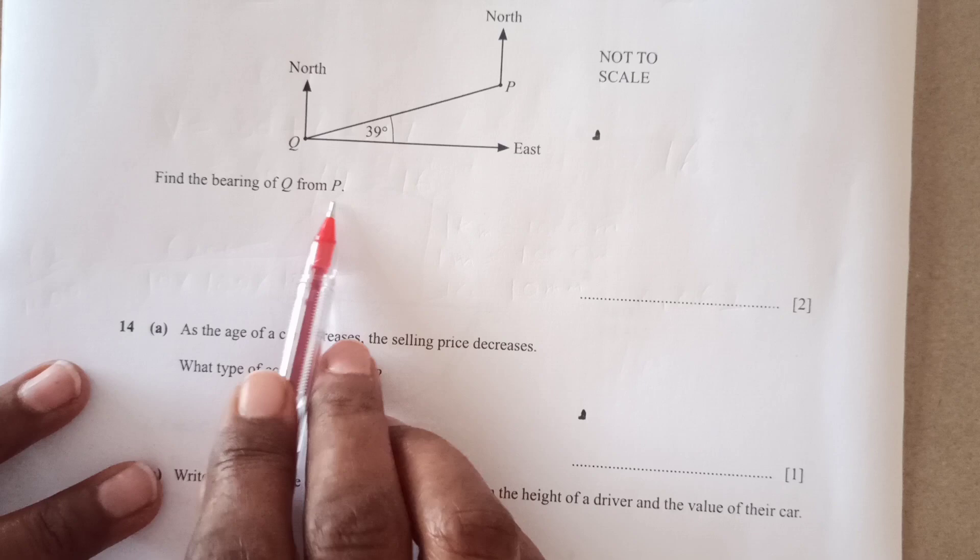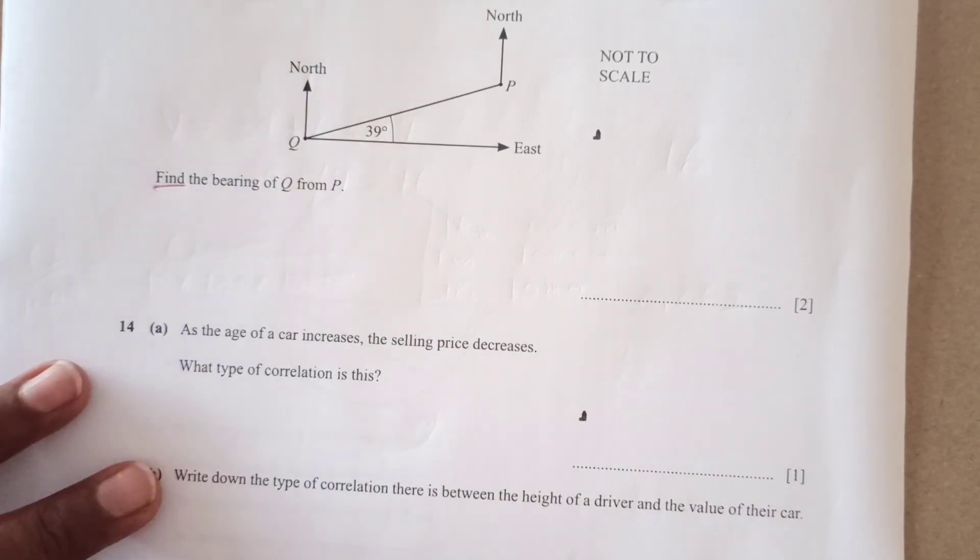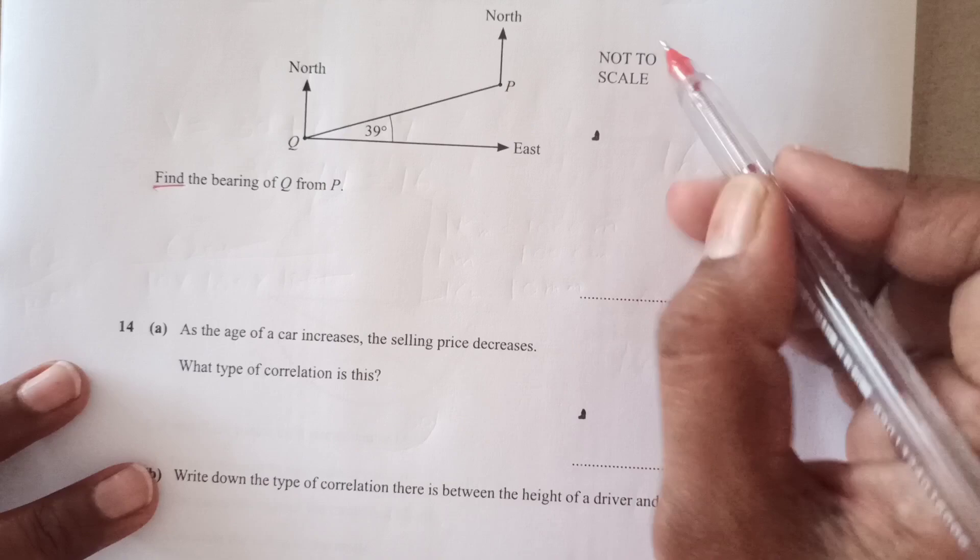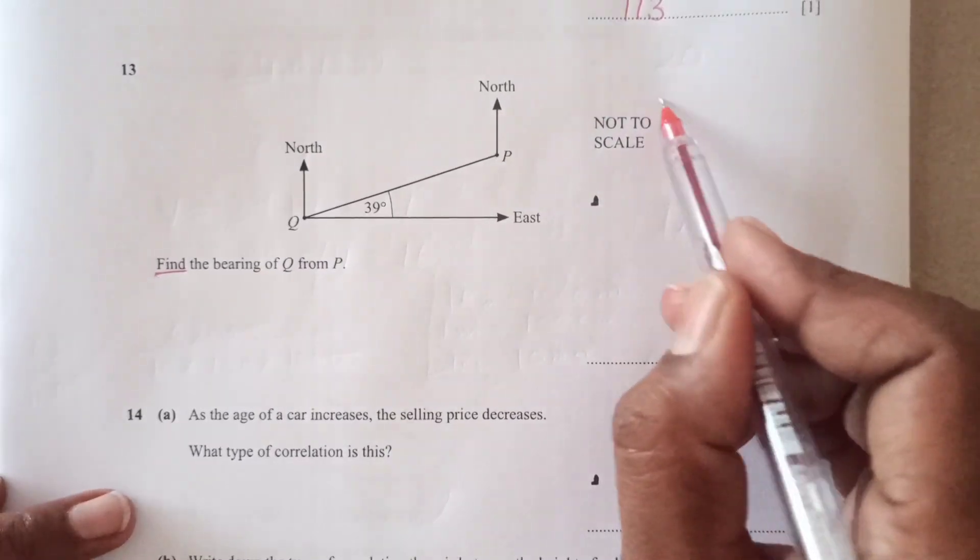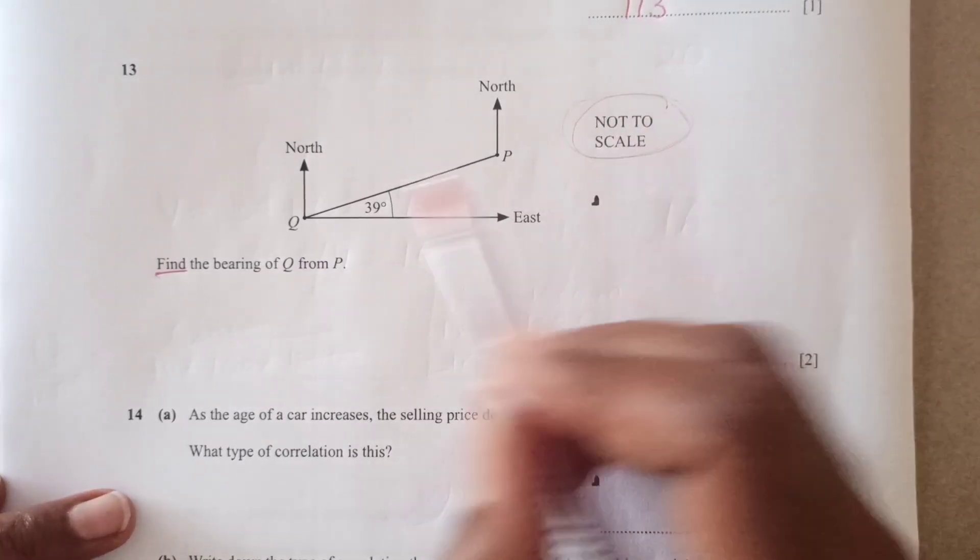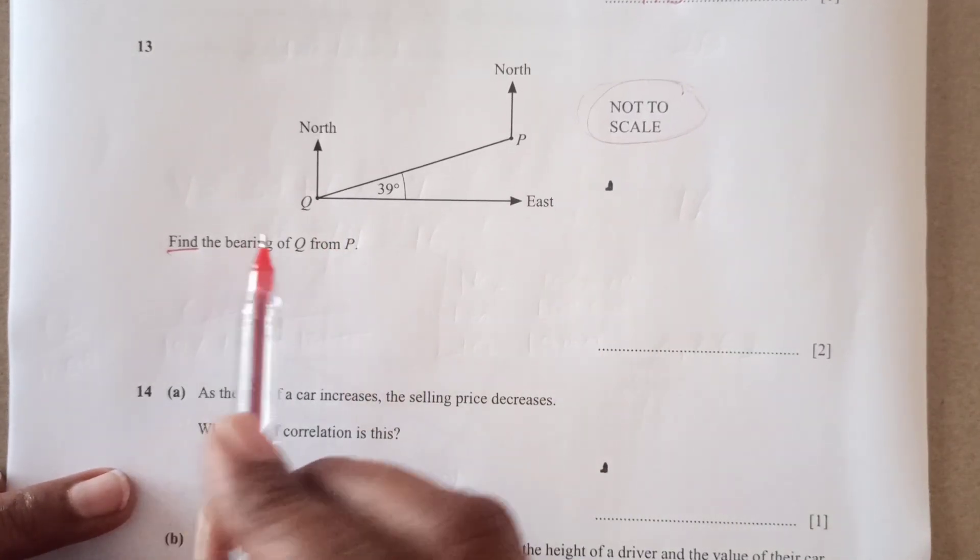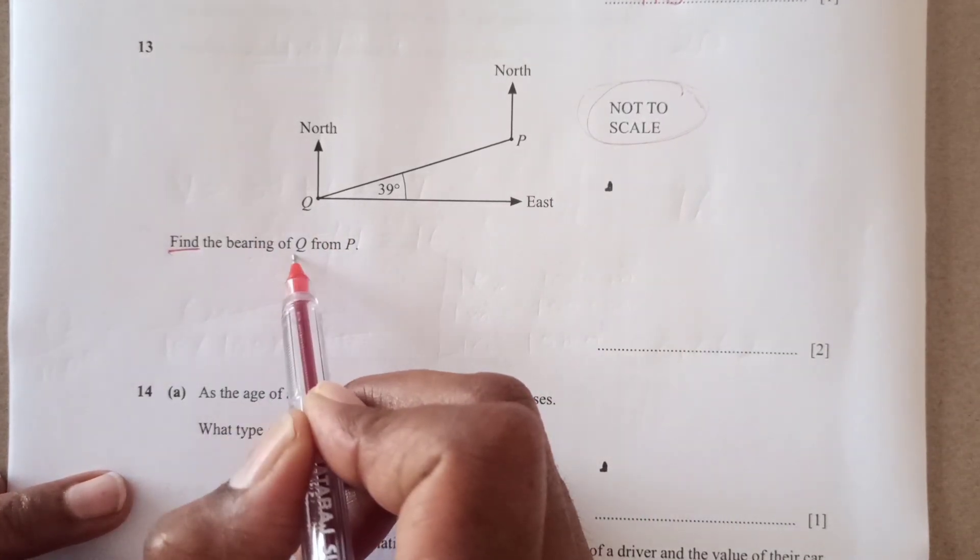Now find the bearing of Q from P. Now you see it is written find, it is not measure. So you are going to calculate, not measure. And it is written, be careful, mostly students make mistake here, it is written not to scale. So you are not going to measure anything from here. So you are just going to calculate the bearing of Q from P.